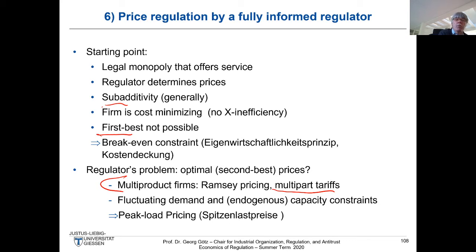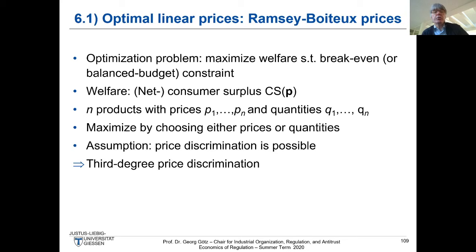The second big part in today's lecture will be peak load pricing — in German, Spitzenlastpreise — where you have fluctuating demand. How much of the demand you satisfy depends on how much you invest in capacity. Therefore, capacity is a decision variable and capacity is endogenous. The big question is: what should a fully informed regulator do? This is a normative approach — we don't ask what regulators actually will do.